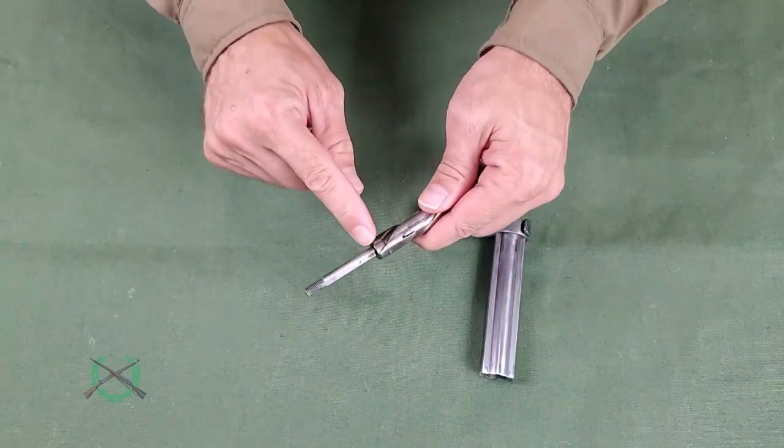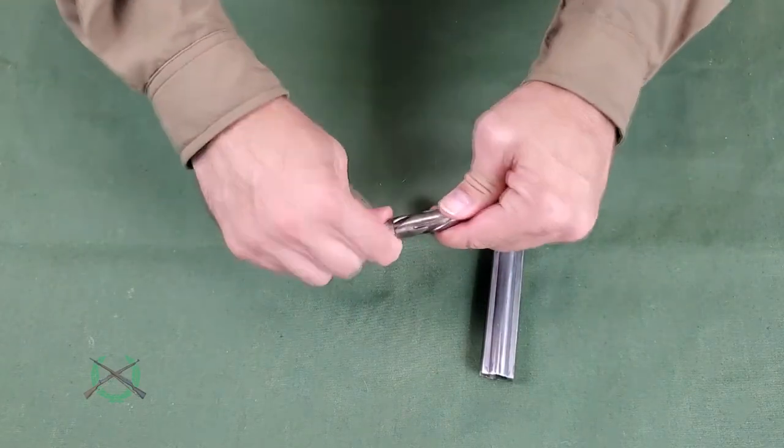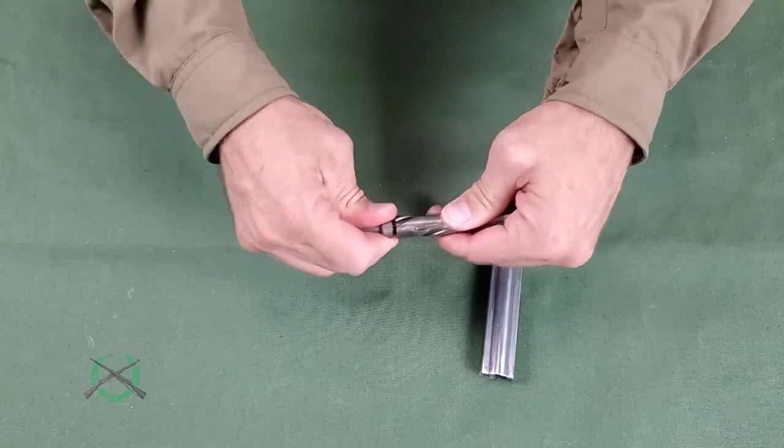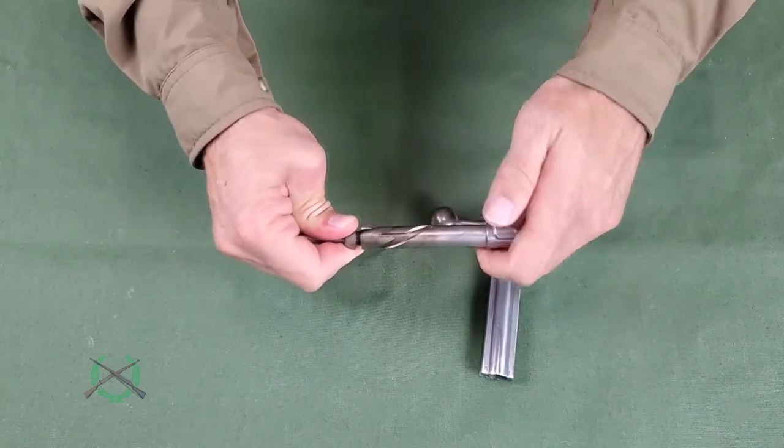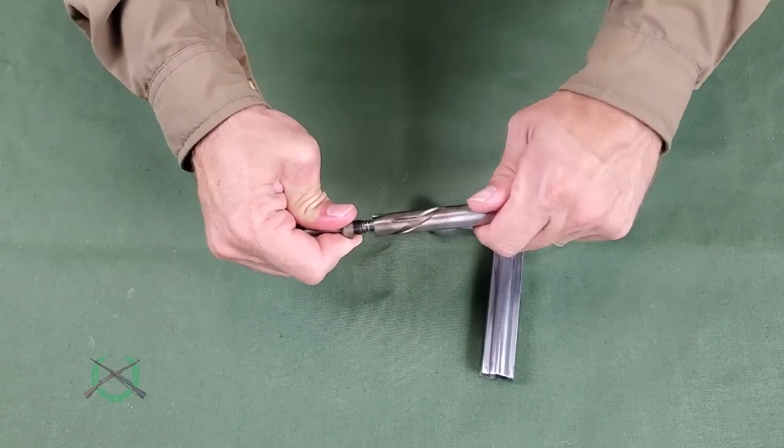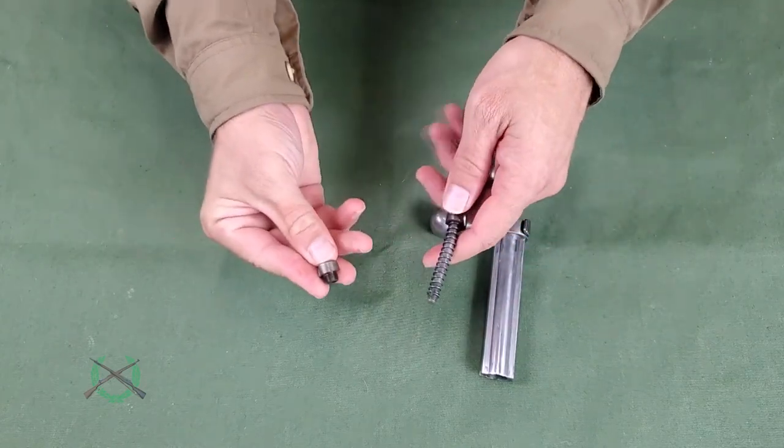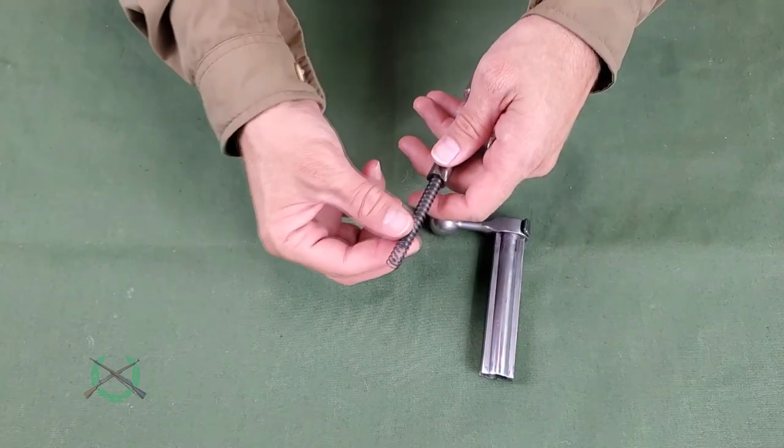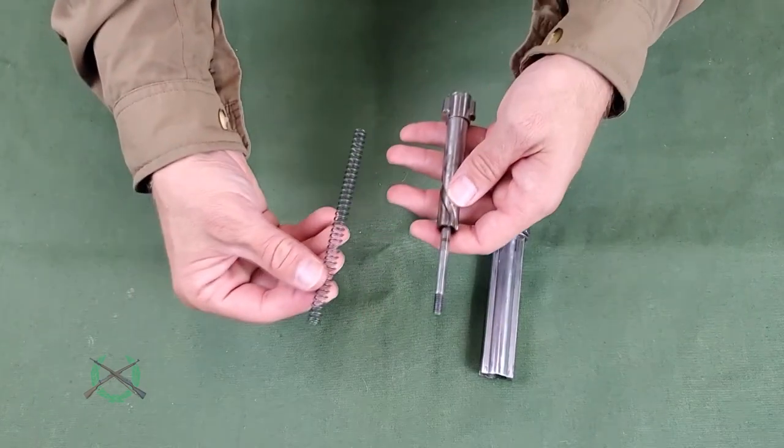To remove the firing pin from the bolt head, unscrew the firing pin retaining nut from the firing pin by rotating it counterclockwise. This is under pressure from the firing pin spring, so ensure control of the firing pin retaining nut is maintained. With it removed, the firing pin and spring can be removed from the bolt head.